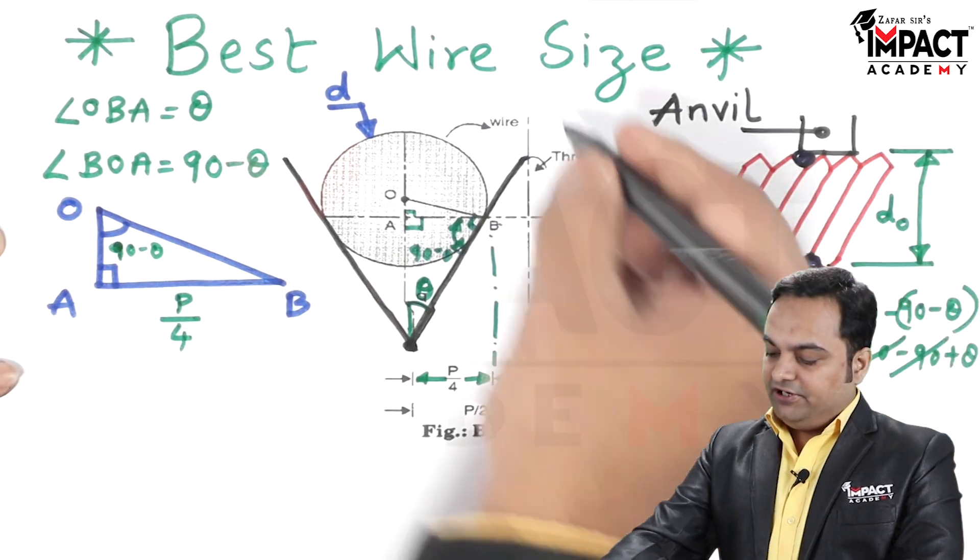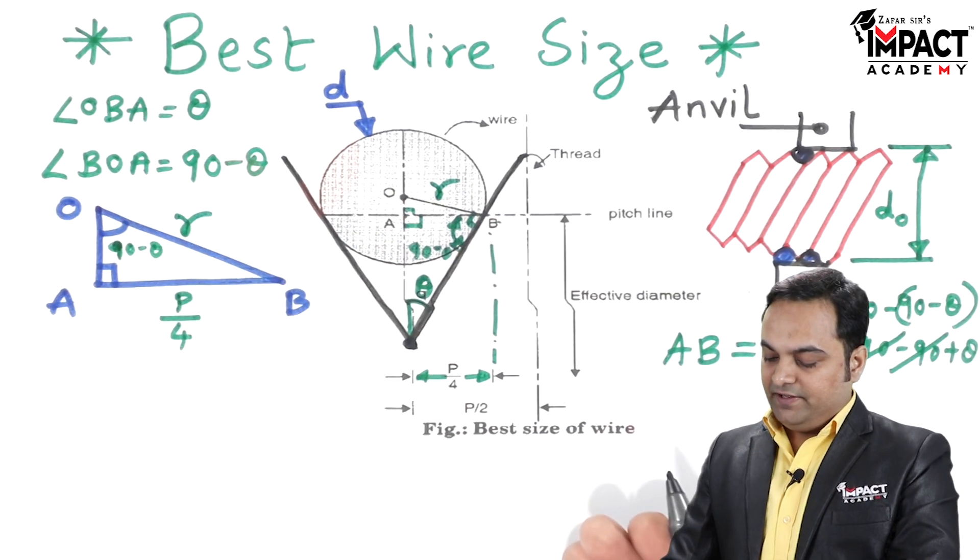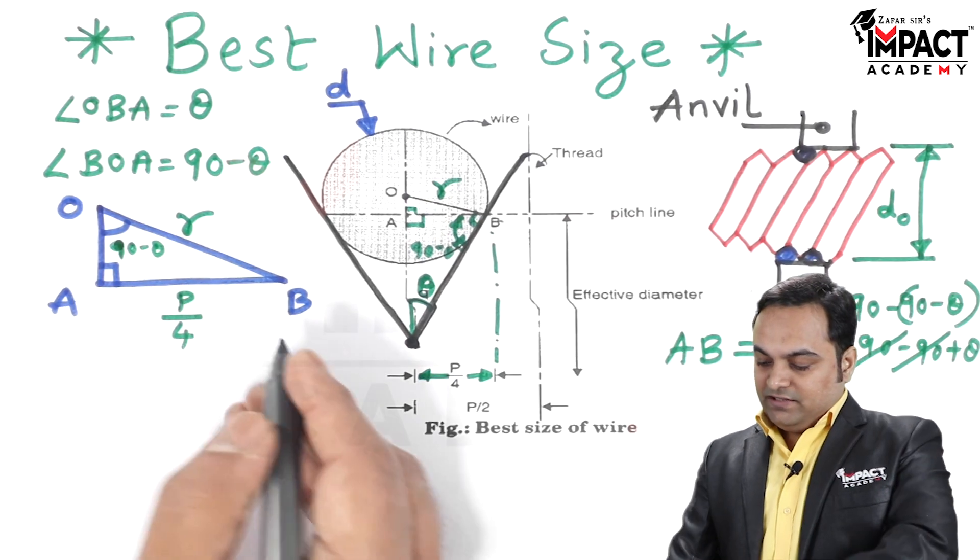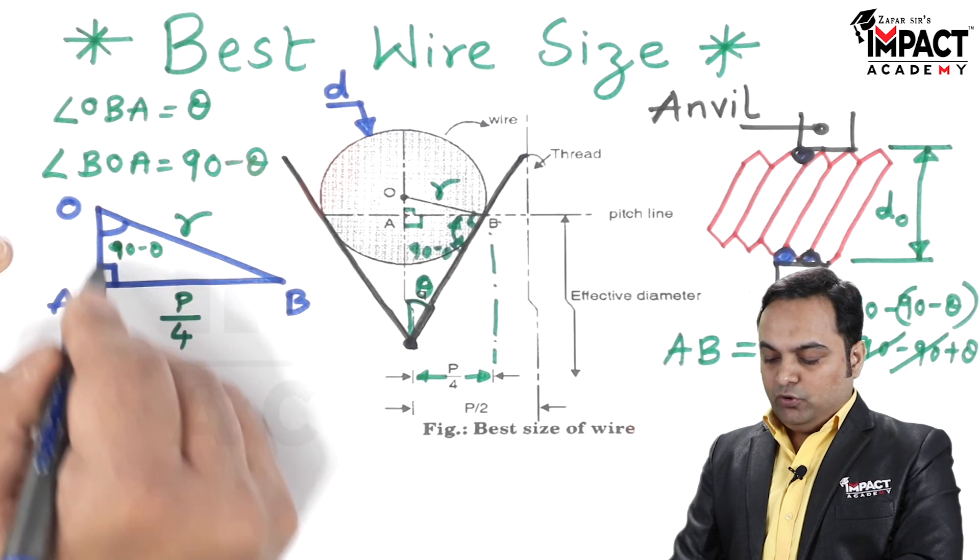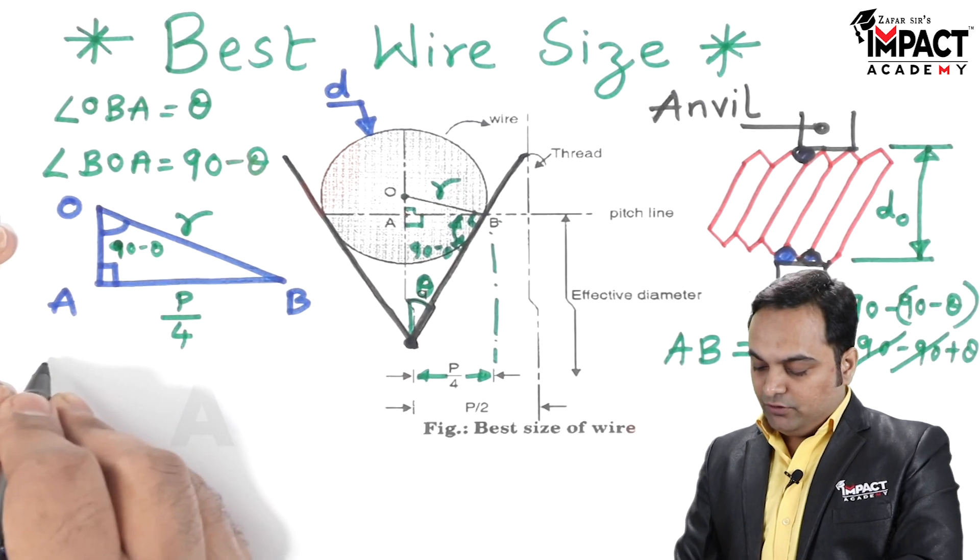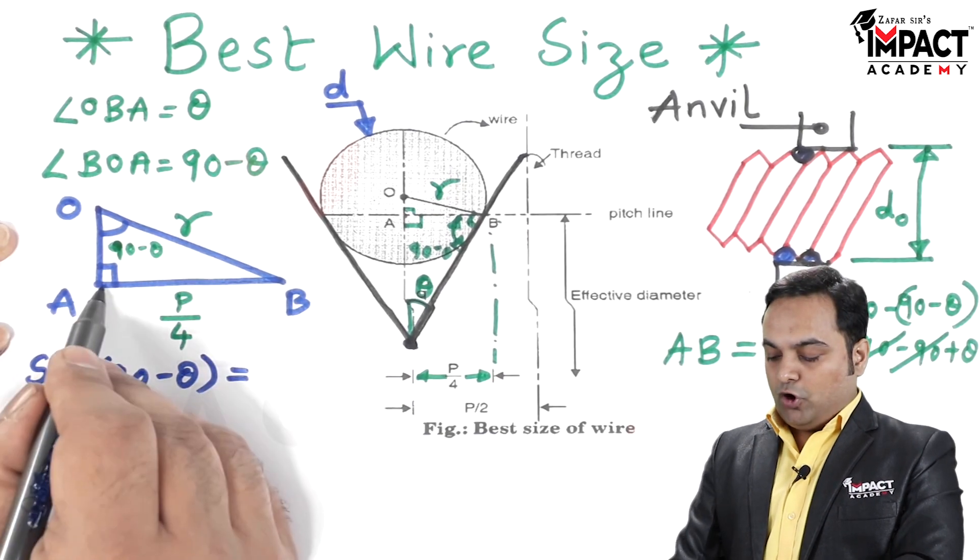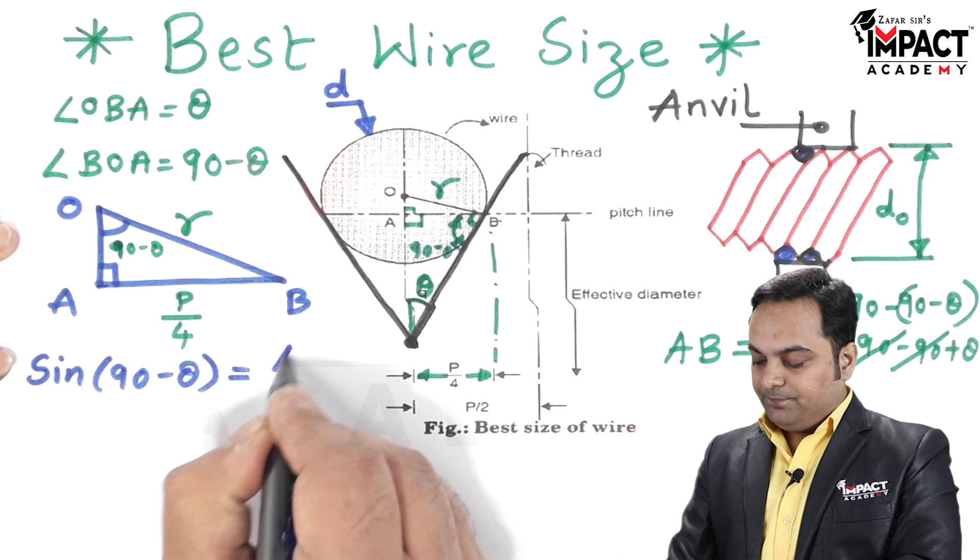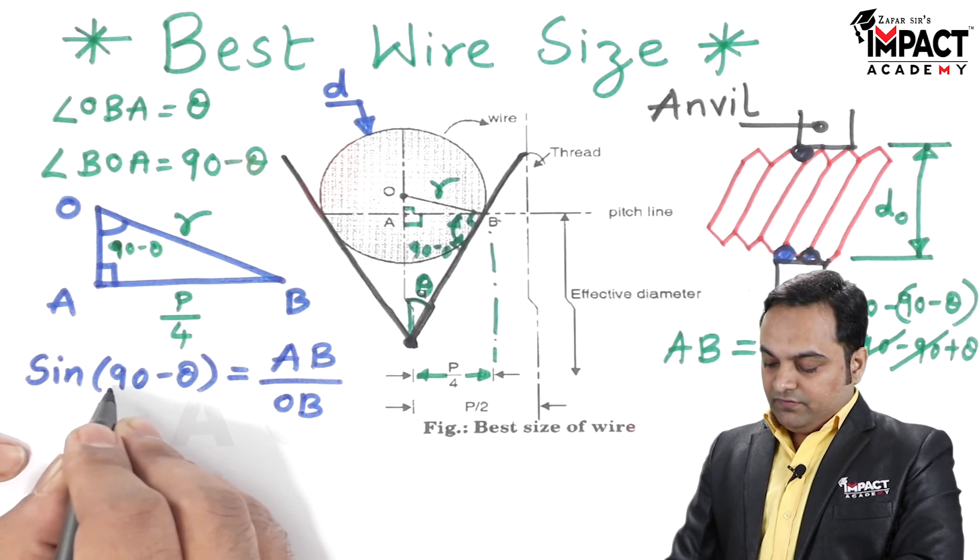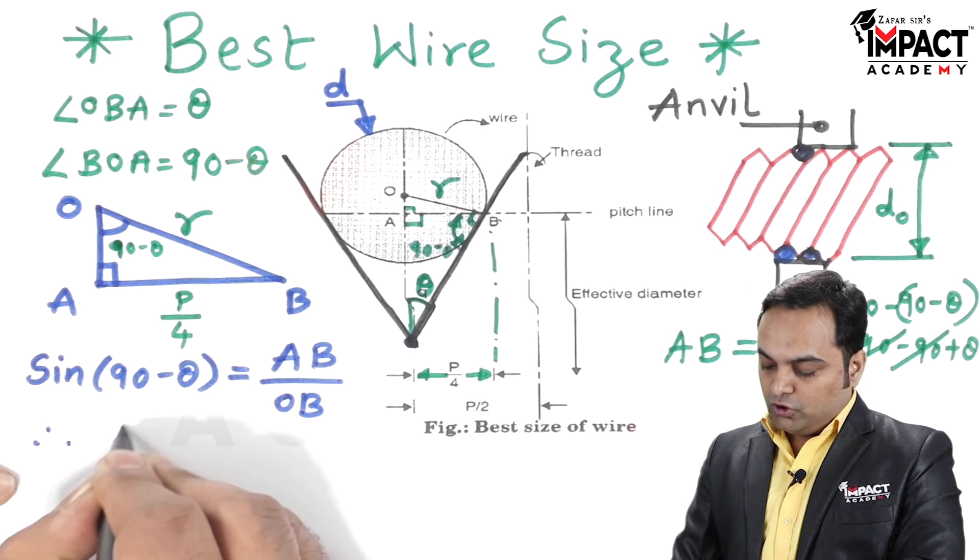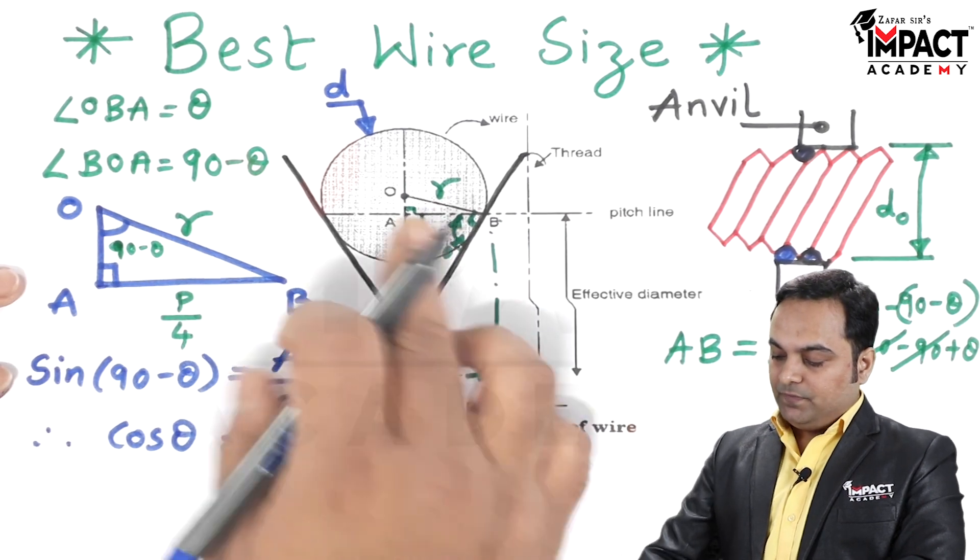And now I can see that in triangle OAB, this angle BOA is 90 minus theta. So sine of this angle, sine (90 minus theta), is opposite upon hypotenuse. Opposite side is AB, the hypotenuse is OB. Now sine (90 minus theta), which is equal to cos theta, AB upon OB is R.